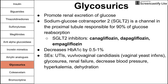Side effects of the SGLT2 inhibitors relate to peeing out excess glucose: increased risk of UTIs, especially in women; vulvovaginal candidiasis; glycosuria; renal failure; decreased blood pressure; dehydration; and hyperkalemia. These drugs also promote substantial weight loss because you are essentially ridding your body of sugar through the urine.